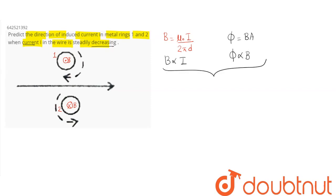From these two relations, we can say magnetic field is proportional to current, and magnetic flux is proportional to magnetic field. Therefore, from these two relations, it can be written that magnetic flux is proportional to current.